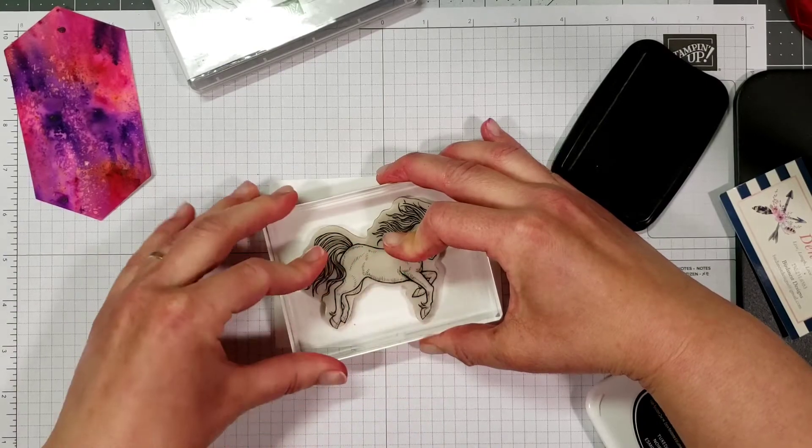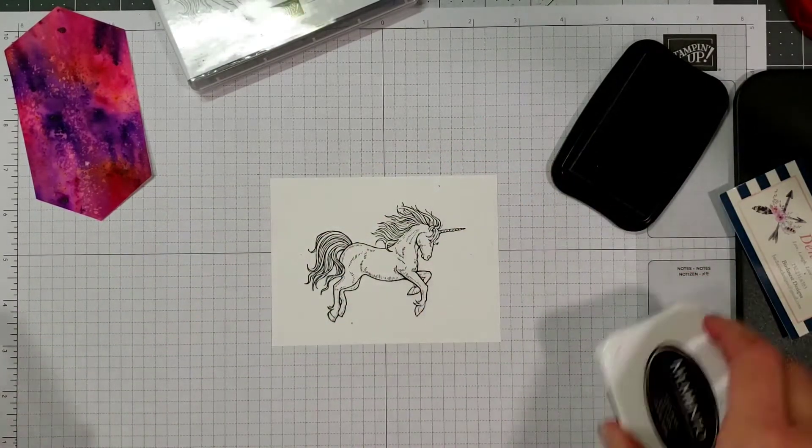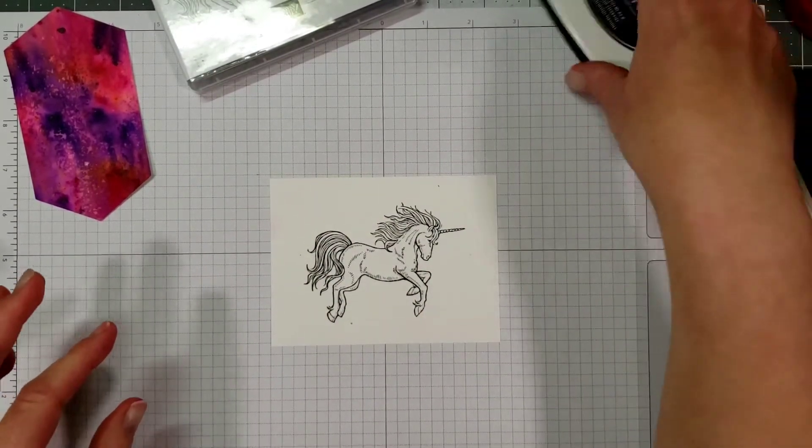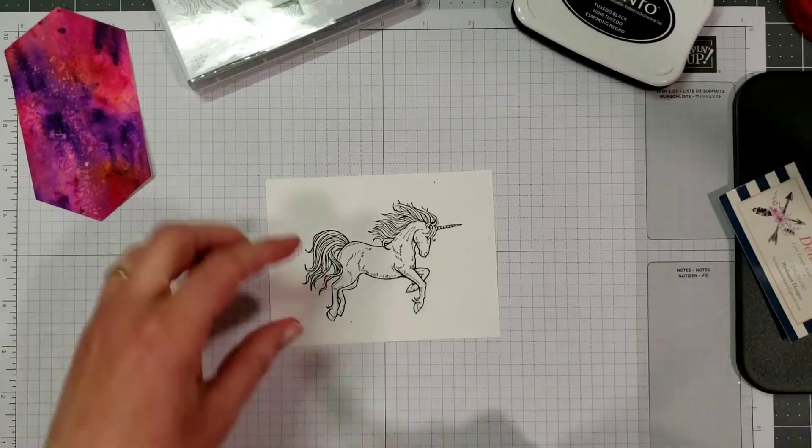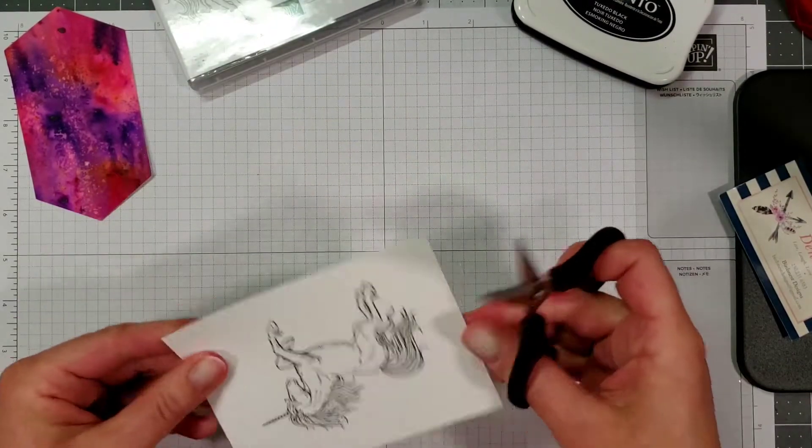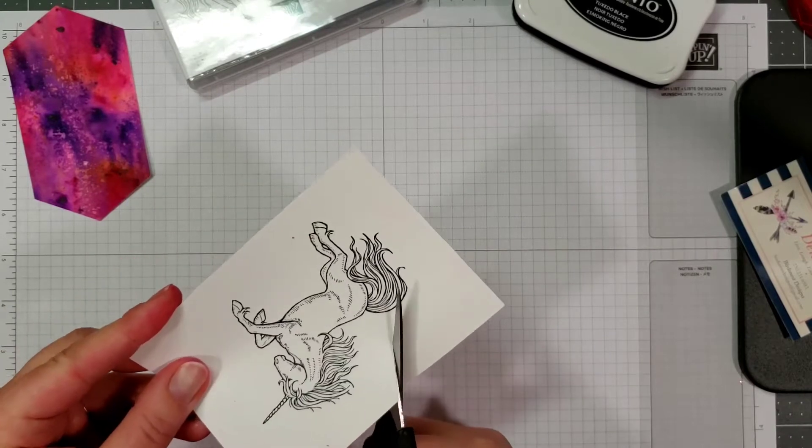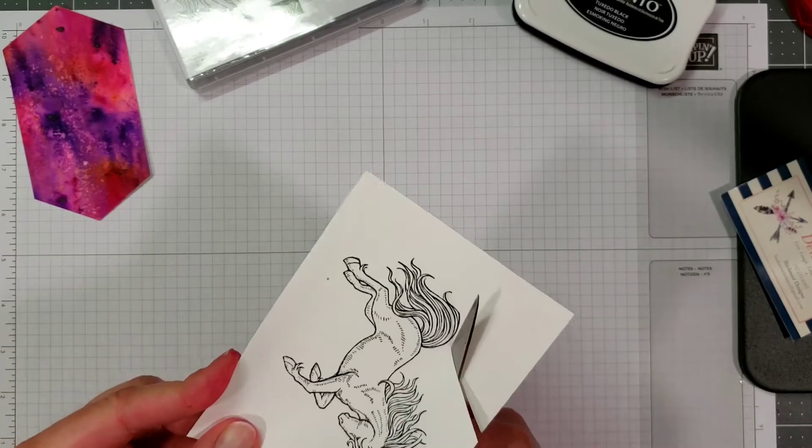Now we are going to fussy cut the unicorn out. Just want to show you a quick trick that I learned a while ago: when you're cutting these images out the easiest way to do it is to cut and move the paper.